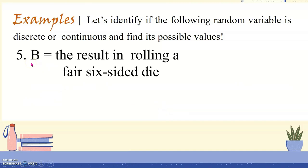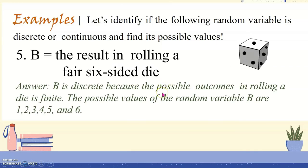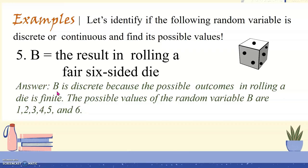Number 5: B is the result of rolling a fair six-sided die. In rolling a fair six-sided die, the possible outcomes are finite, meaning random variable B is a discrete random variable. The possible values of B are 1, 2, 3, 4, 5, and 6.